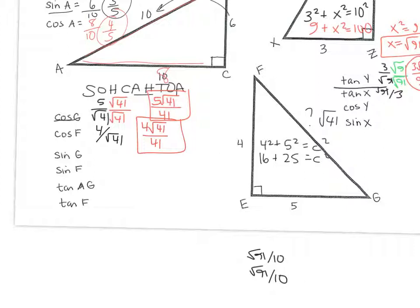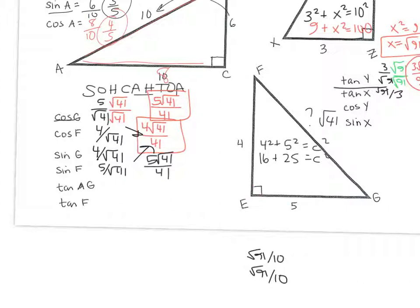Sine of G: sine is opposite divided by hypotenuse. Start at G — opposite is 4 and the hypotenuse is the square root of 41, so it's 4 over root 41, which rationalizes to 4 root 41 over 41. Sine of F: opposite of F is 5 over root 41, which rationalizes to 5 root 41 over 41. Tangent of G is opposite over adjacent: that's 4 fifths. Tangent of F is opposite over adjacent: that's 5 fourths.